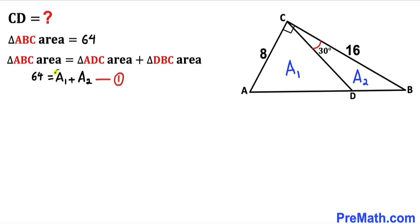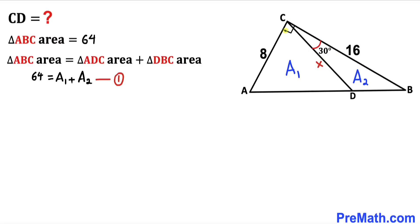Our task is to find A sub 1 and A sub 2. Let's assume the distance CD is x units. We know the whole angle at C is 90 degrees, and angle BCD is 30 degrees, so the remaining angle ACD must be 60 degrees.